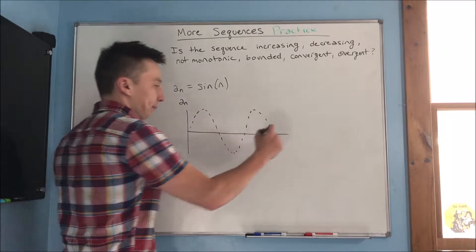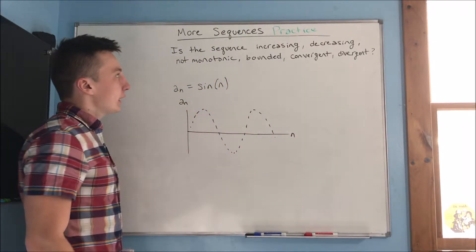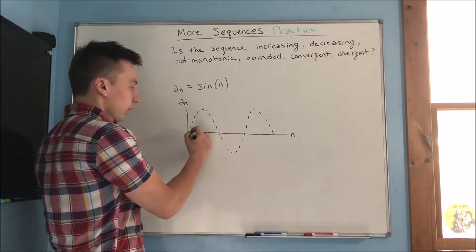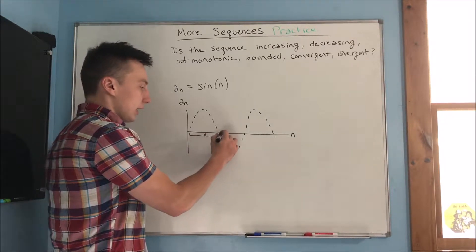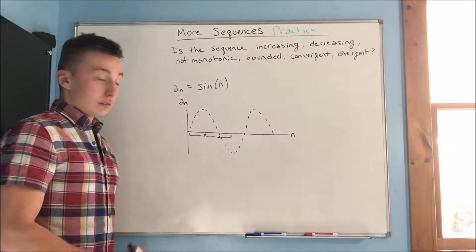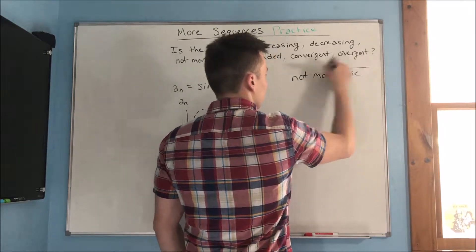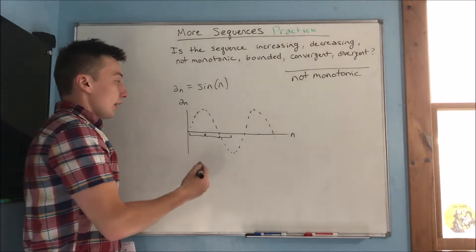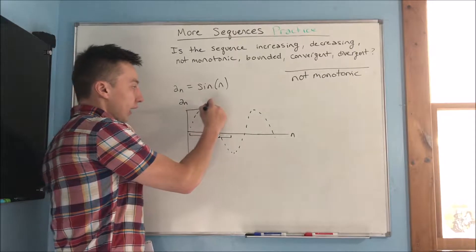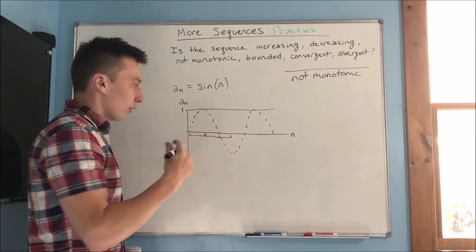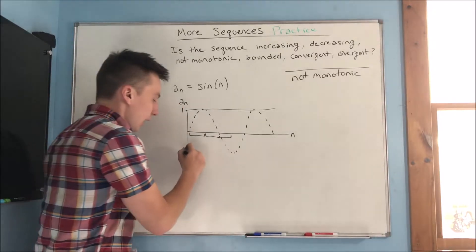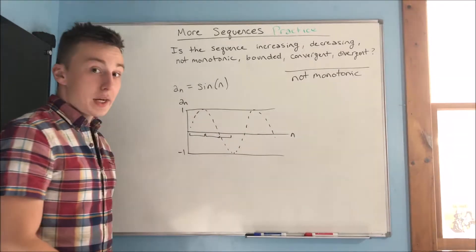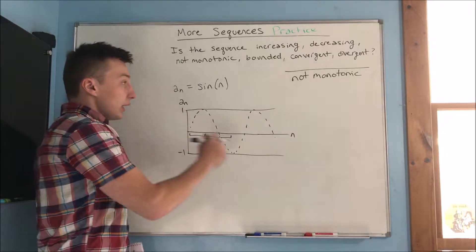First off, is this increasing, decreasing, or not monotonic? Well, it's not purely increasing or decreasing, because you can see that right here it's increasing and right here it's decreasing. So this is not monotonic. Next, is this bounded or not bounded? We can say that it's bounded because it's never going to cross a sub n equals one, and it's never going to get any smaller than negative one.